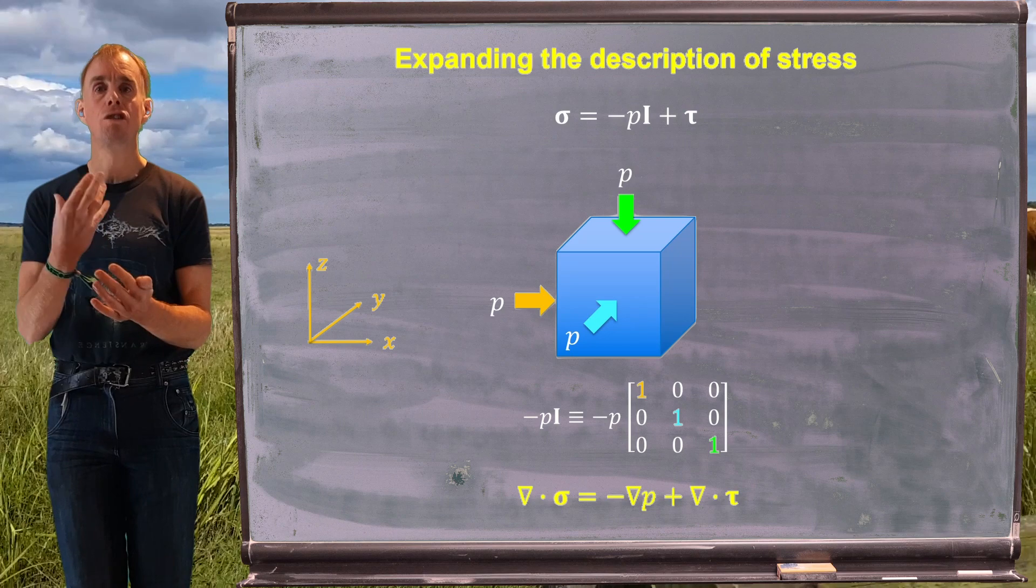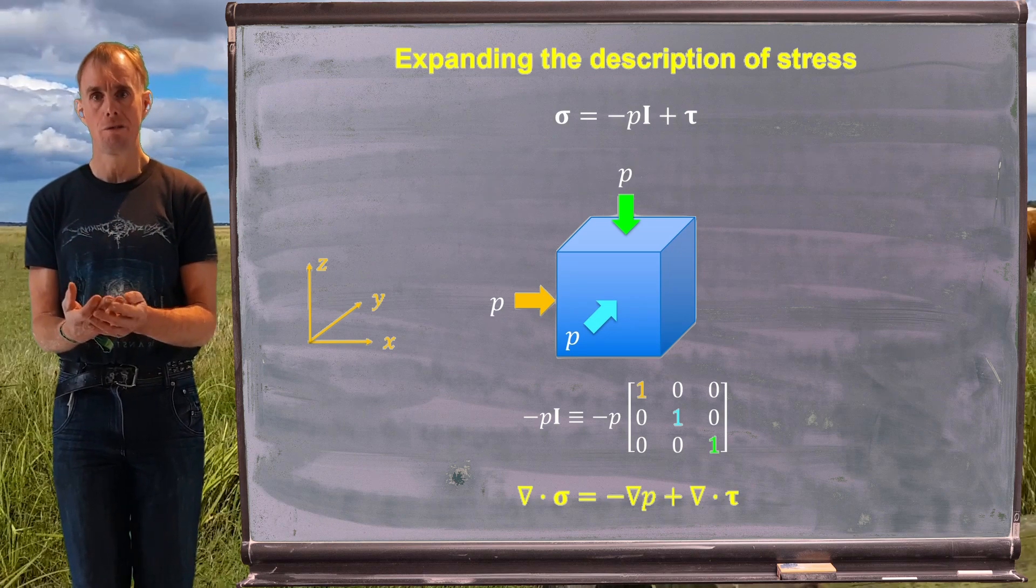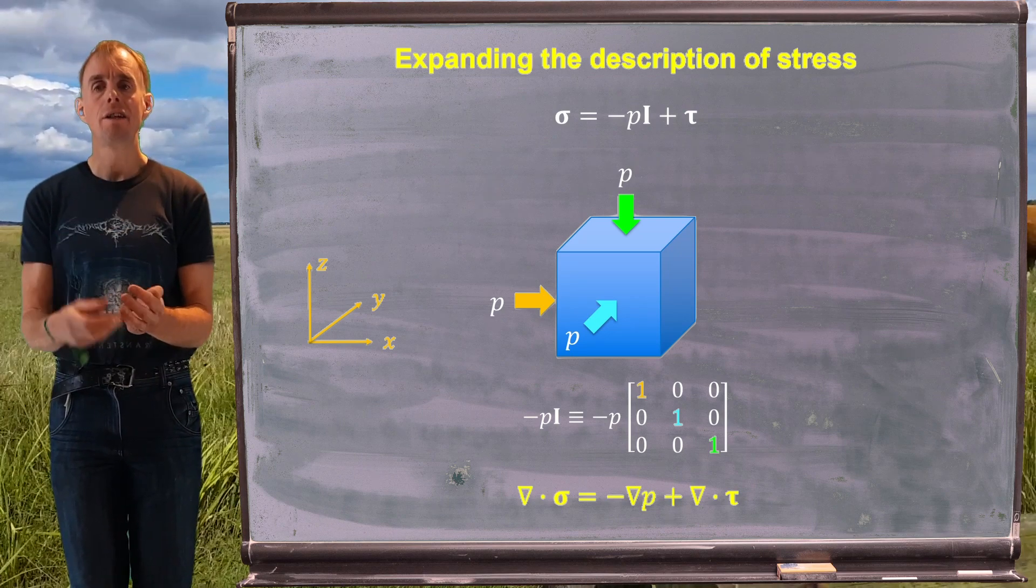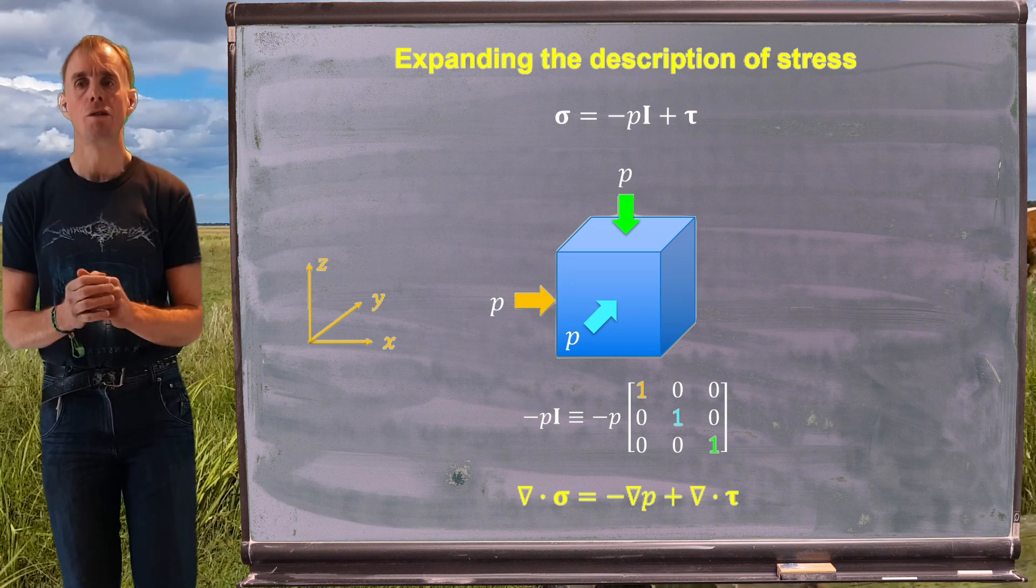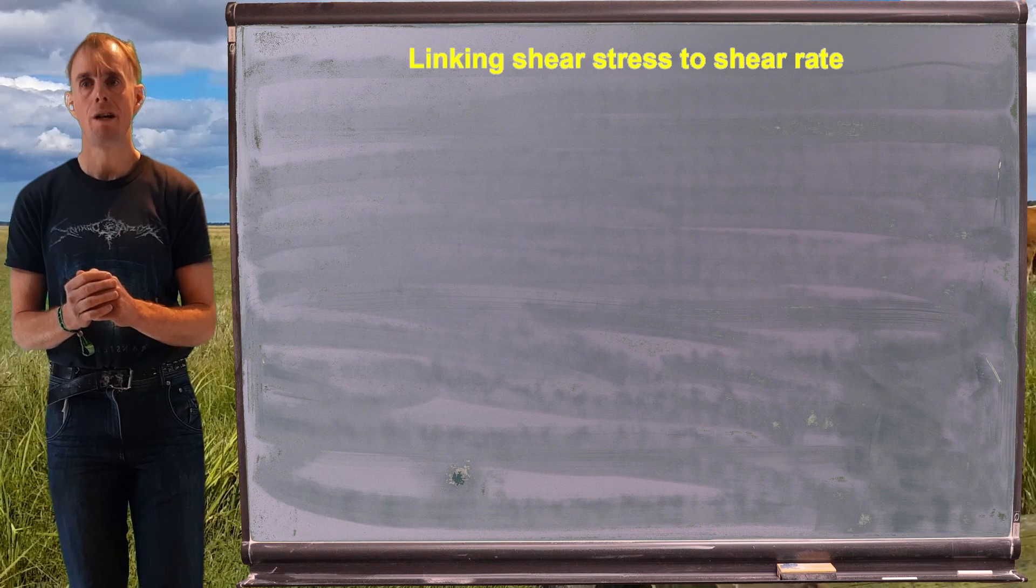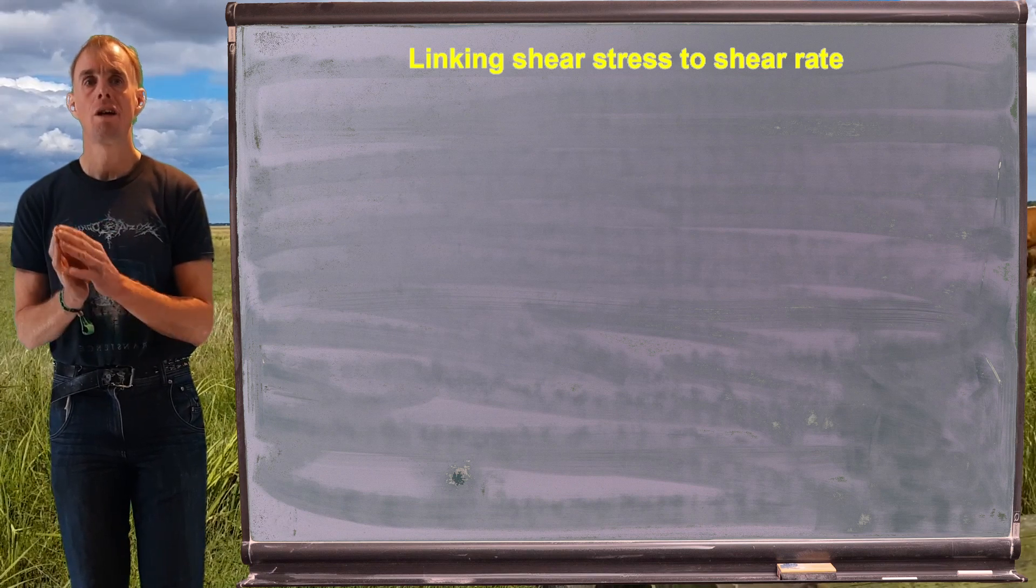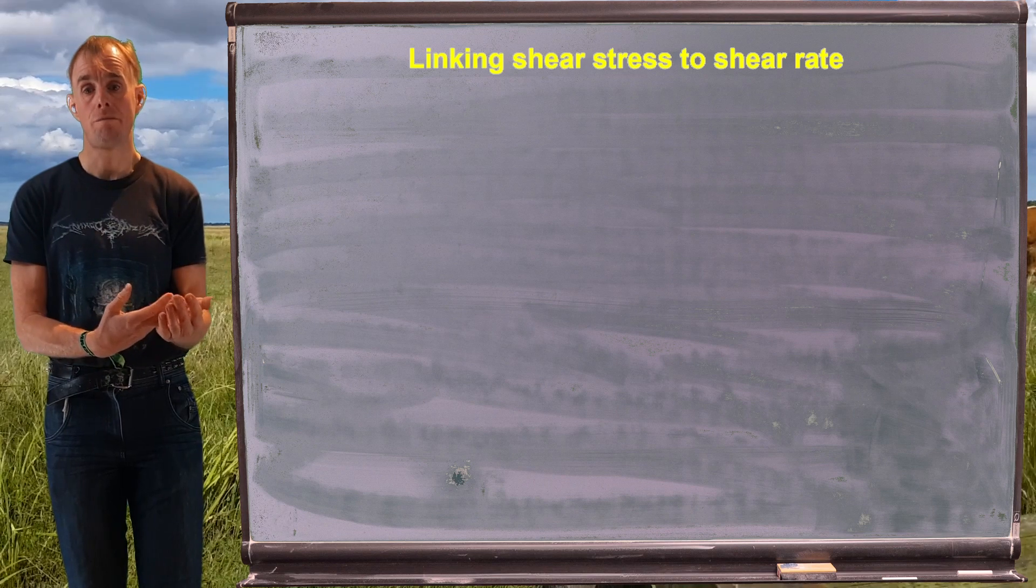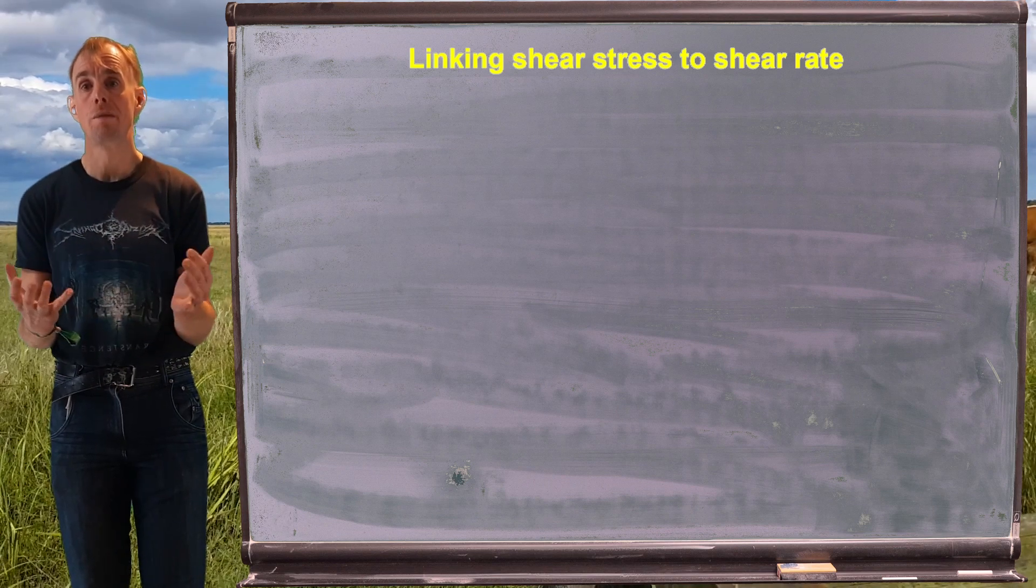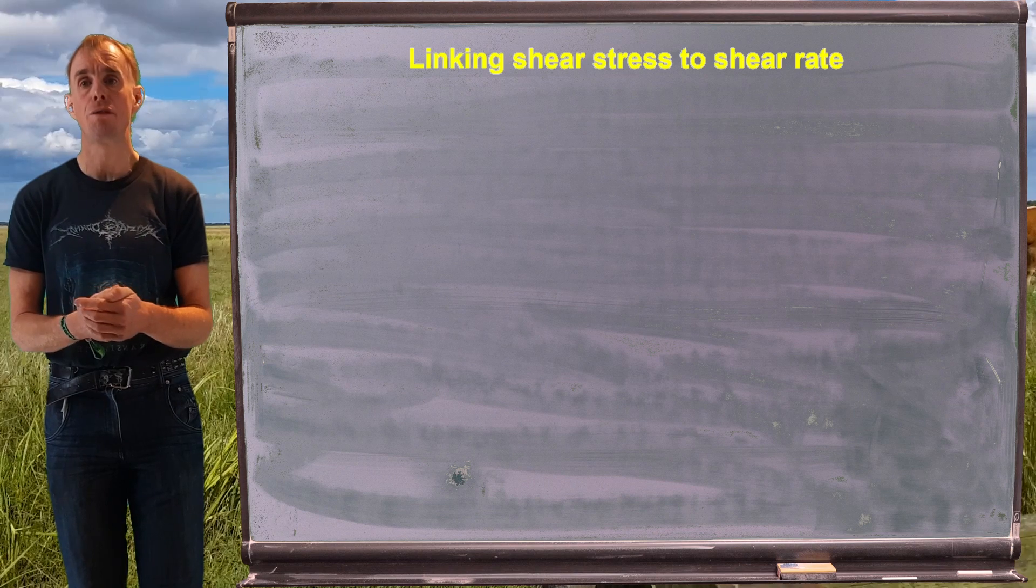And tau are those stresses that result from deformation of the fluid. So let's think a little bit more about how we quantify that deformation. And this is where we need our rheological constitutive equation, because we're going to link that stress resulting from deformation to the rate of deformation, the velocity fields that cause the material to deform in the first place, as we saw in lesson three.